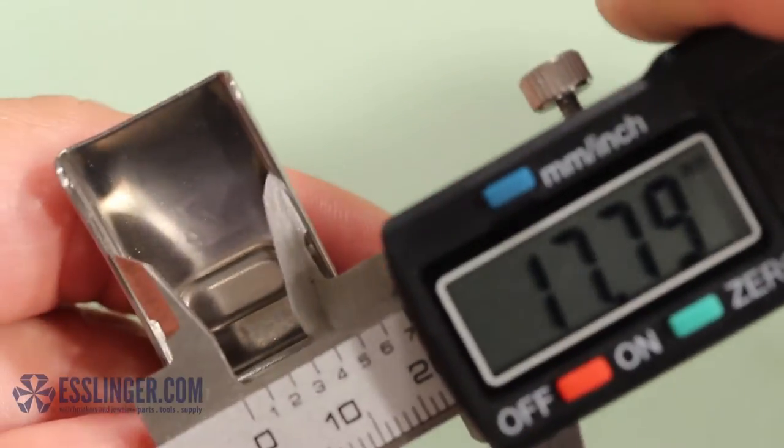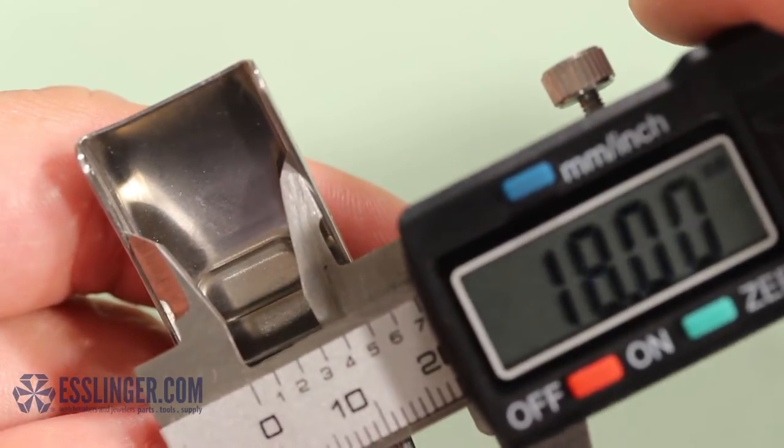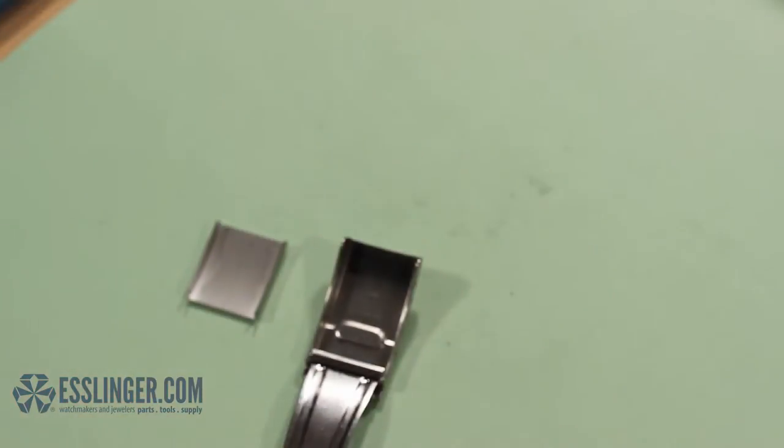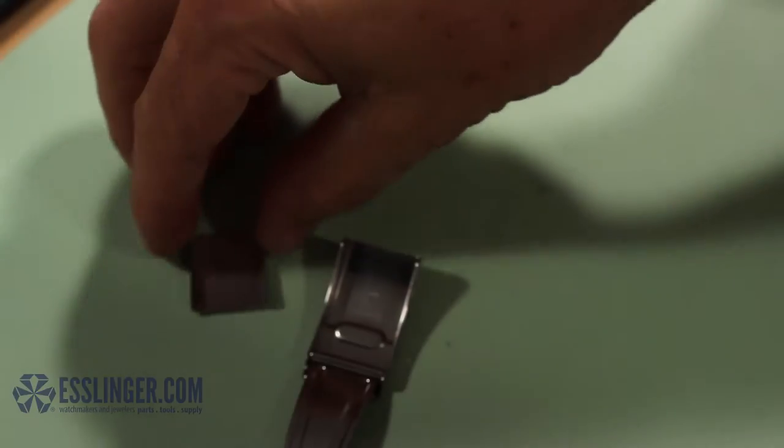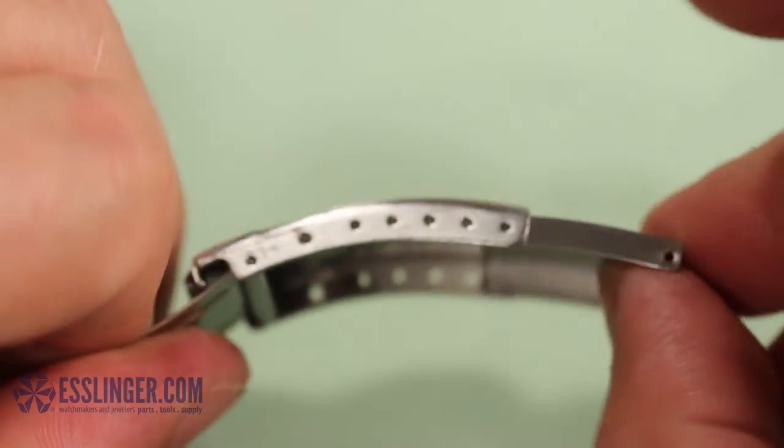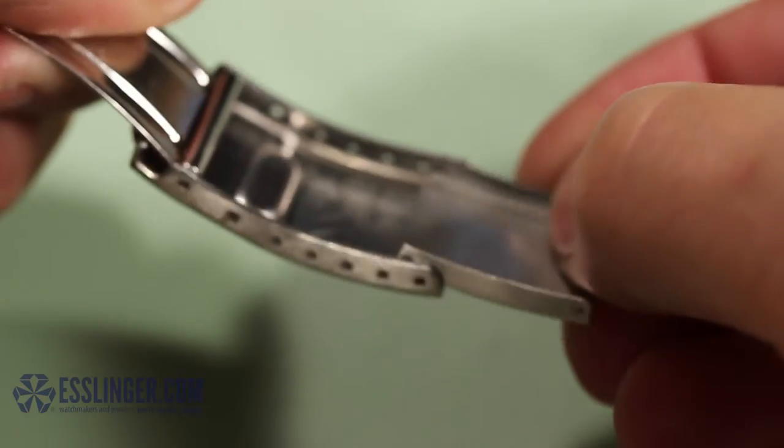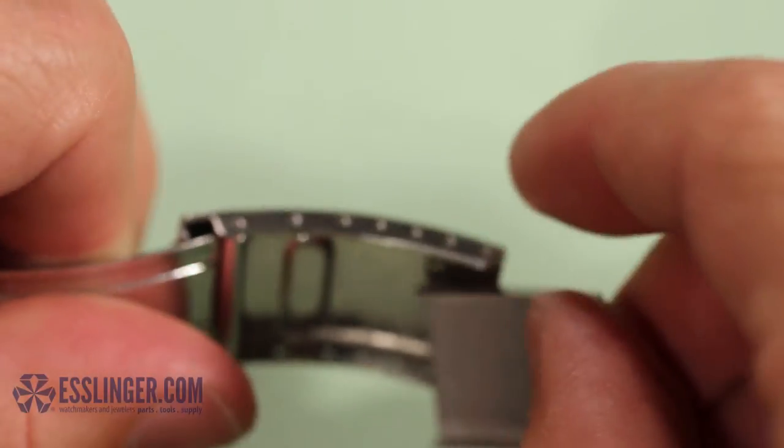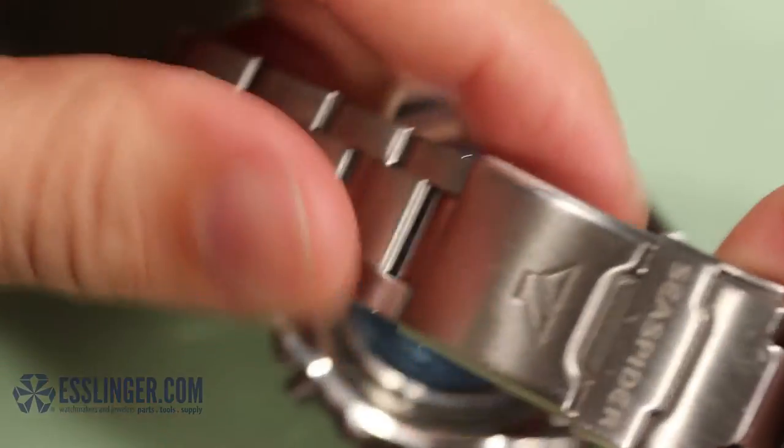Take your digital gauge and line the backward opening jaws up inside the clasp. Use that inside measurement you found to order a new buckle extender. Its outside diameter should be the same as the inside diameter of the existing clasp. Be sure to order an extender that matches your watch band and clasp.